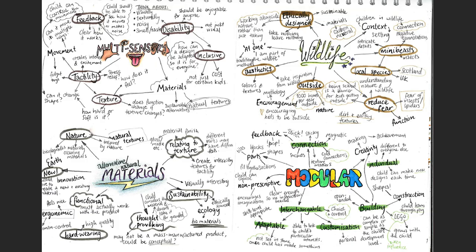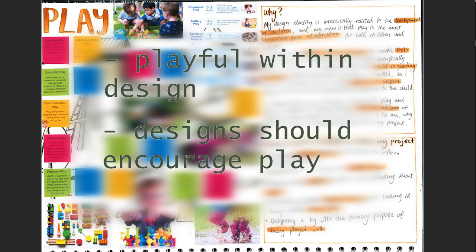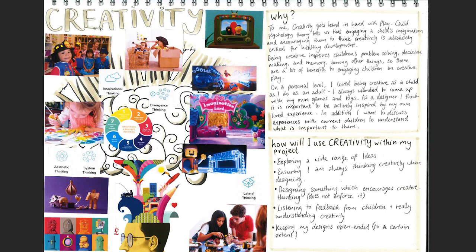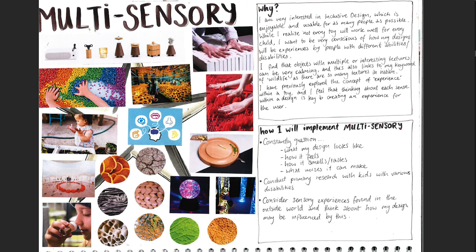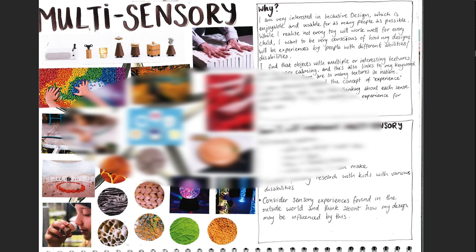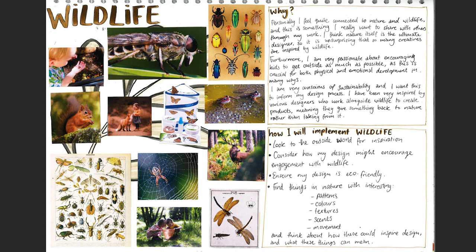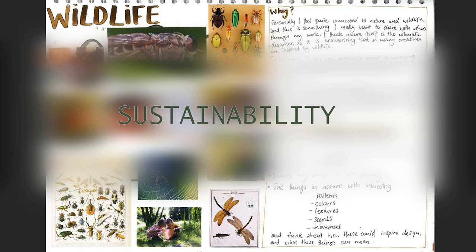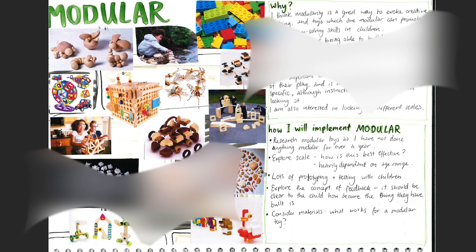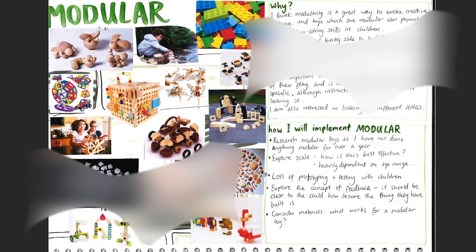I went back to my keywords and really tried to turn the words into actions. For play, I wanted to be playful with my designs and encourage play — it also linked to my dissertation on risky play. Being creative improves children's problem solving, decision making and memory. I chose multi-sensory because I was interested in designing for as many people as possible, conscious of disability and different abilities. This linked to nature, as the outside world has so many sensory experiences. I see modularity as a great way to evoke creative thinking and encourage skills like building.